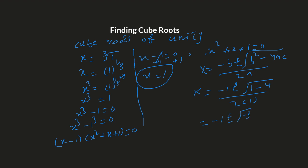This gives negative one plus or minus the square root of negative three, over two. Since we have a negative under the radical, that gives a complex number — we write it as iota. So the roots are negative one plus or minus root three iota, over two. The three cube roots of one are: one, and negative one plus or minus root three iota, over two.